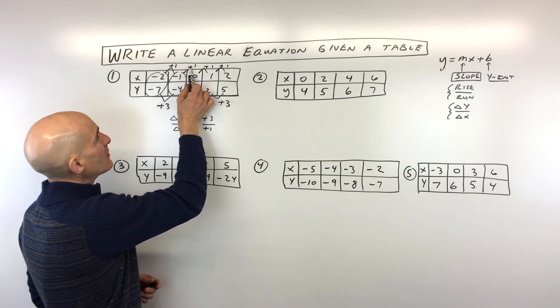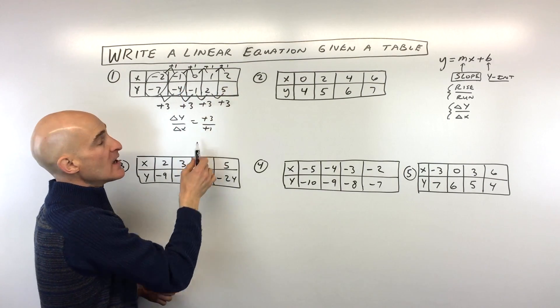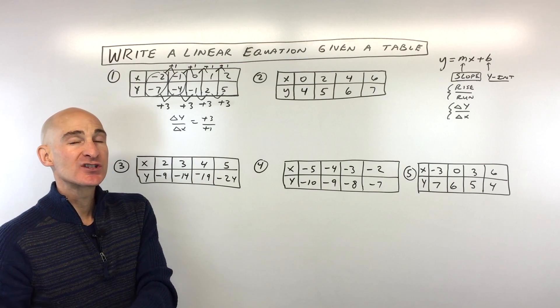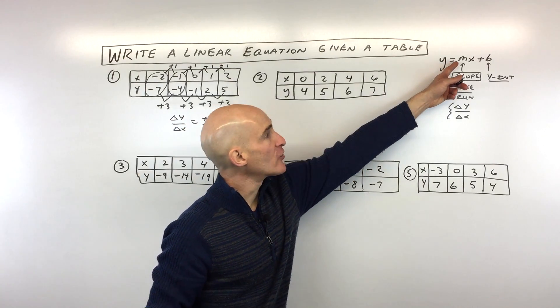And same thing here. See, up 3 over 1, up 3 over 1. So that change in y over change in x is our slope. That's our m value right here.